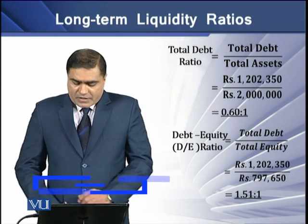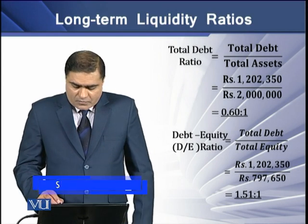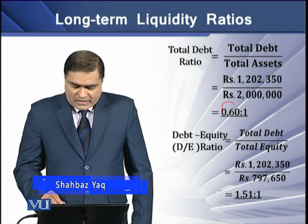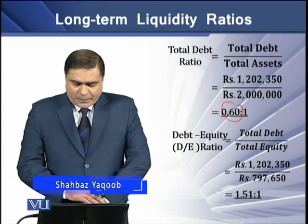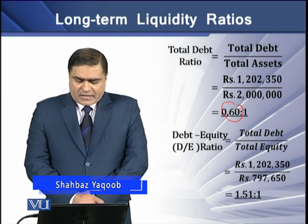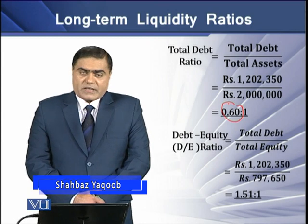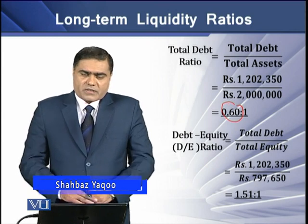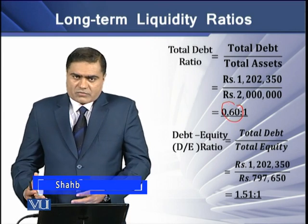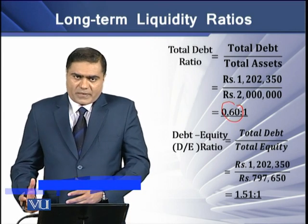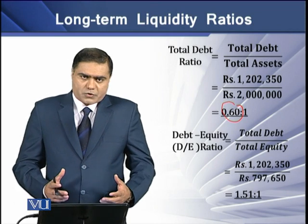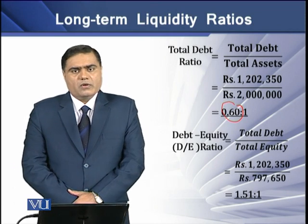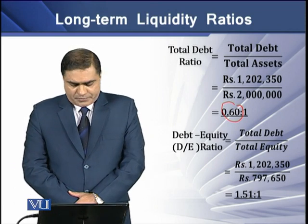We get a ratio of 0.60. This means that 60% of its total assets have been financed through long-term debt.